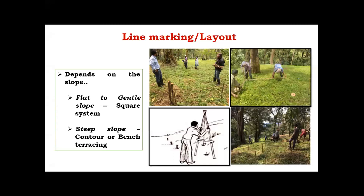We should follow the square system of planting where there is flat to gentle sloped area. Where there is a steep sloped area, we should go for contour or bench terracing with the help of an A-frame. The A-frame is an important implement used to lay contour lines across the hill to form contour bunts. This contour line or bench terracing will help conserve soil as well as soil moisture wherever the hill is too steep.